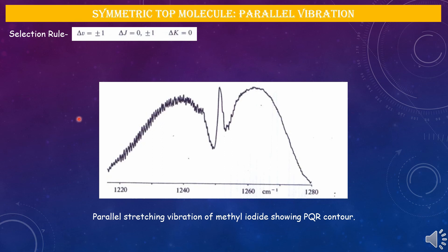The intensity of the Q branch depends on the ratio IA/IB, which is the ratio of moments of inertia for a symmetric top molecule. When IA equals zero, the symmetric top becomes linear, and for a linear molecule there is no Q branch intensity — the Q branch is absent for a linear molecule.